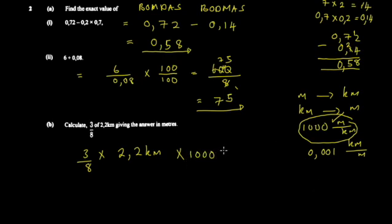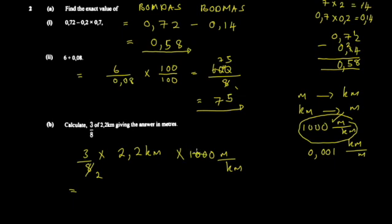So we write times 1000 meters per kilometer. The reason to introduce the conversion factor before simplifying is to make cancellation cleaner. You can cancel 4 into 8 to get 2, and 4 into 1000 to get 250. Notice the kilometers cancel — this is critical, especially in physics, as you observe how units change. So you get 3.3 times 250.